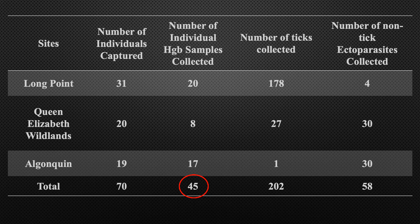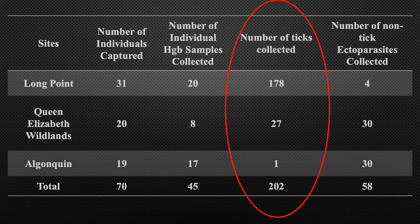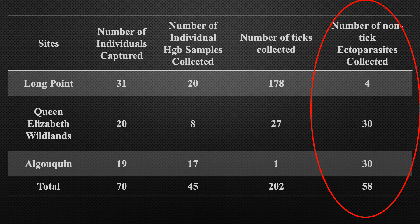45 hemoglobin samples were collected overall, though as you can see, there is an imbalance in data collection, specifically in Queen Elizabeth's Wildlands. There is also a vast difference in the number of ticks collected at each site, with Long Point having nearly seven times as many ticks as Queen Elizabeth's Wildlands. It should also be noted that one individual mouse from Algonquin did have a tick found on it, though this was a squirrel tick. This species is not found at great intensities or frequencies on deer mice, though it is common in Algonquin. Other blood feeding ectoparasites were also found, including fleas and mites.